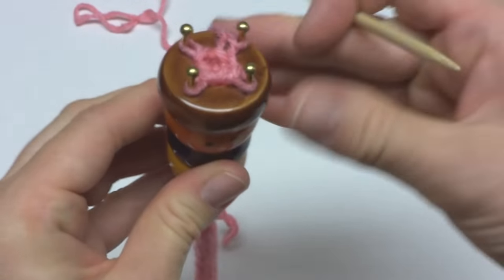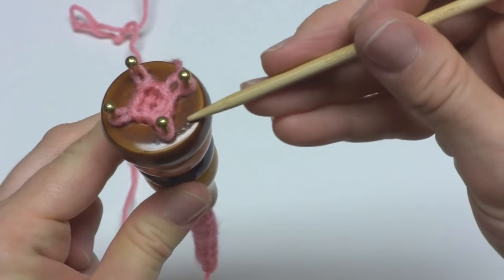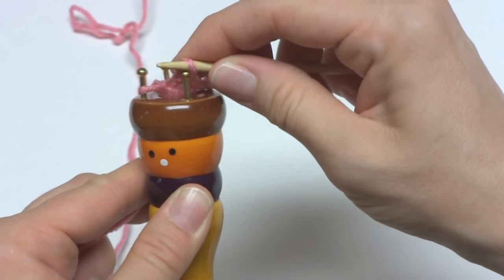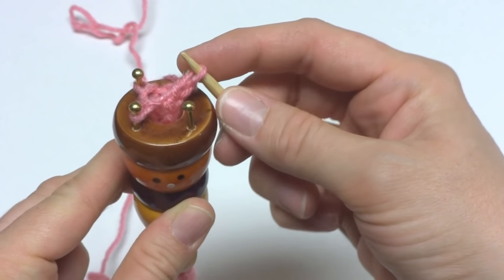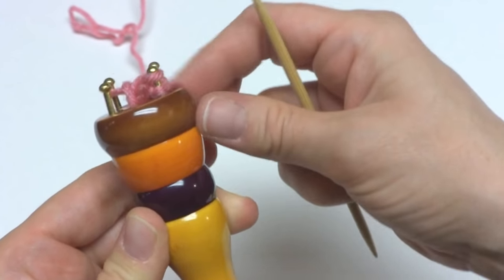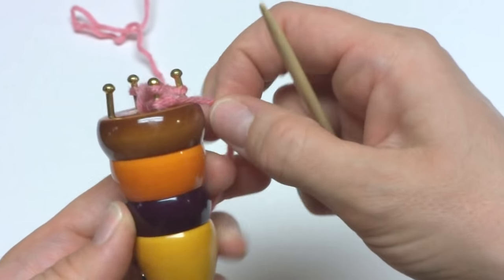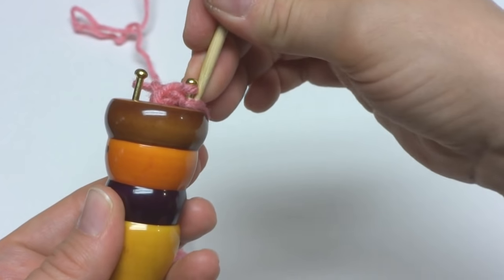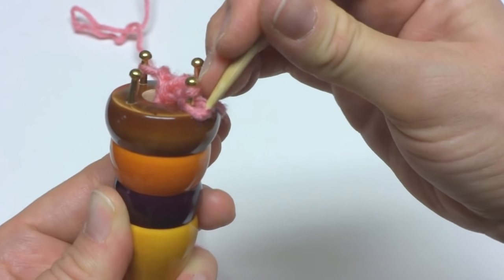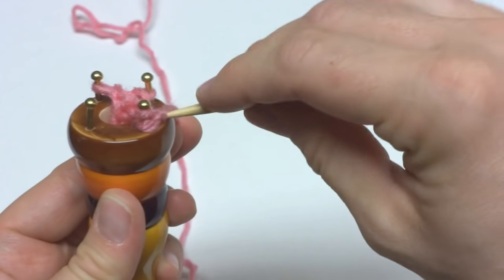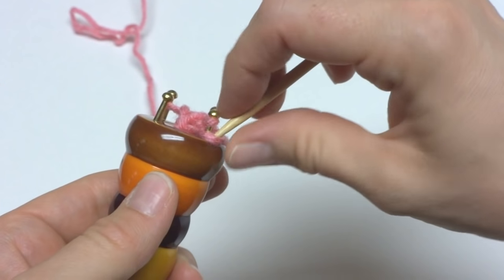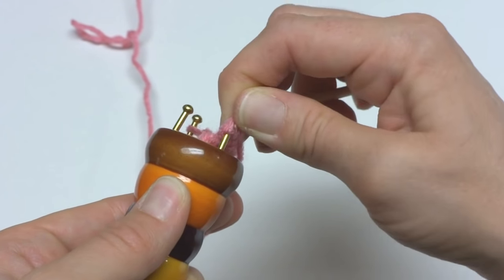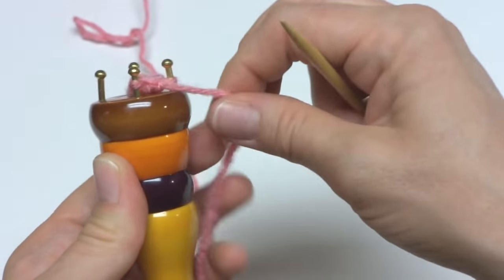What I like to do is simply take the loop off of a peg and move it over to the next peg. And then take the loop that's off the bottom of that peg that we just moved the loop over to, and lift it up and over that peg.